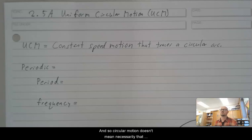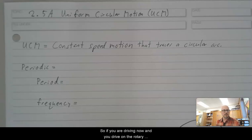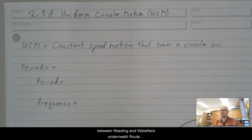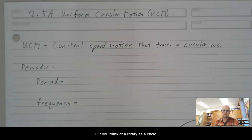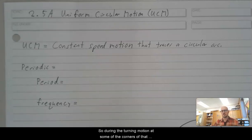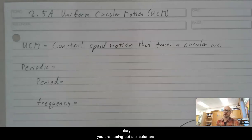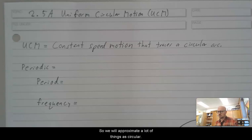Circular motion doesn't mean necessarily that the object completely traces a circle. It just has to trace a shape that can be approximated as a circle. So if you are driving now and you drive on the rotary between Reading and Wakefield underneath through 95, that is not a circle at all. It's kind of like a big triangle with three big turns. But you think of a rotary as a circle. We can approximate that rotary's turns as if they are a circle. So during the turning motion at some of the corners of that rotary, you are tracing out a circular arc, just the other parts you're driving mostly in a straight line. So we will approximate a lot of things as circular.